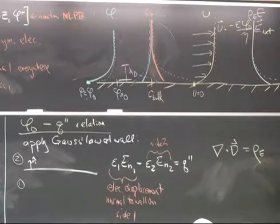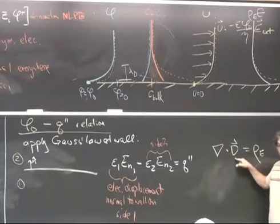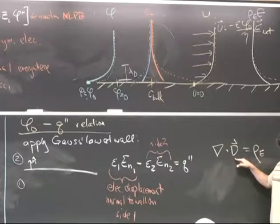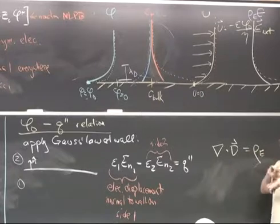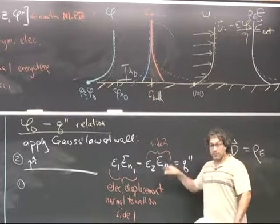If I take that and I look at a control volume and I shrink it down to a wall, rather than getting the divergence of the electric displacement in a three-dimensional sense, I really get the difference between the electric displacements on the two sides. And that's what this is.